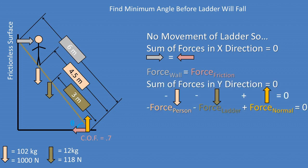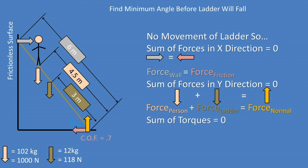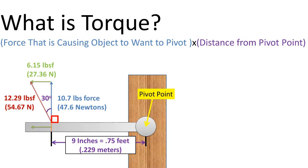Since there is no movement, the sum of forces in the y-direction also equals zero. So negative force of the person minus force of the ladder plus the normal force equals zero. Rearranging, we get that the normal force equals the force of the person plus the force of the ladder. Since the ladder is not moving, the sum of torques must also equal zero. We will need to find the torques of all forces acting about the pivot point at the bottom of the ladder. Torque is the force that makes an object want to pivot times the distance that force is from the pivot point.